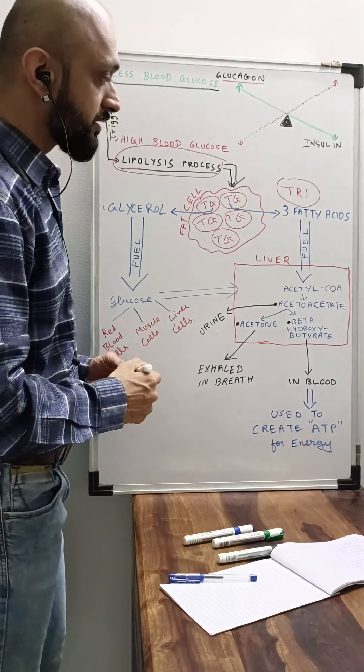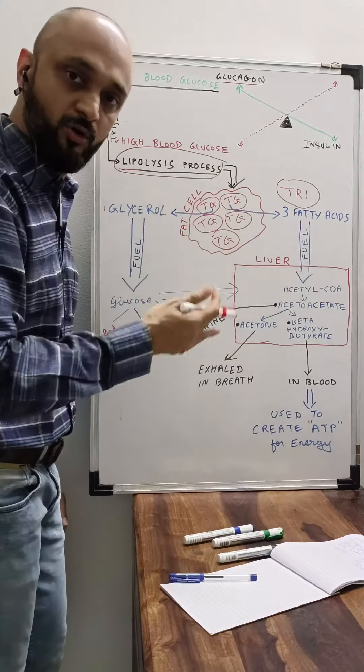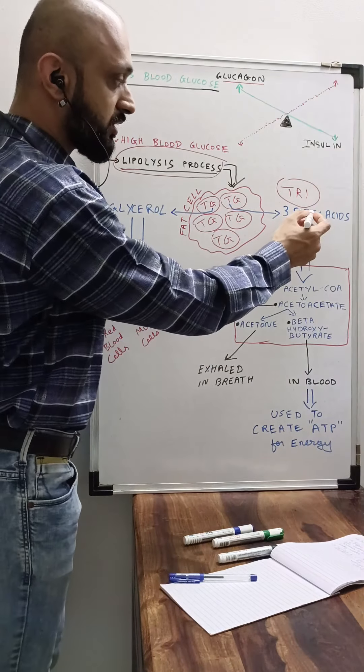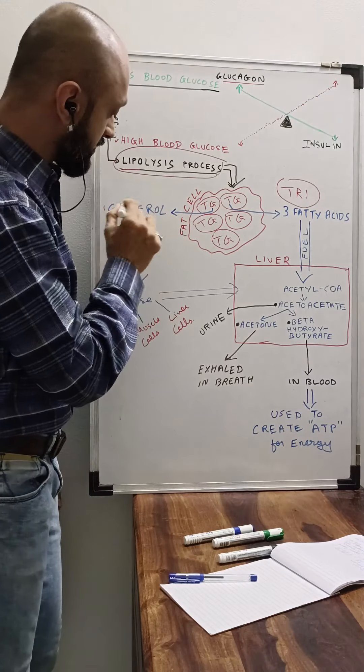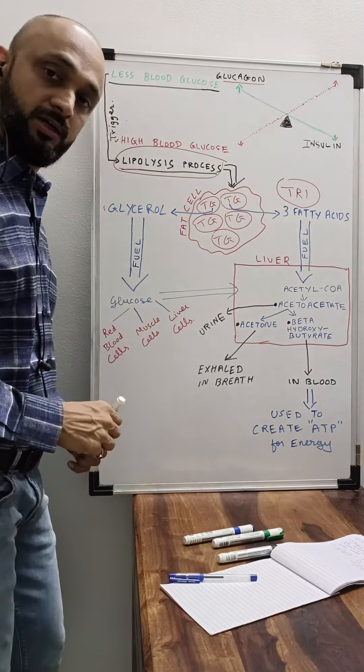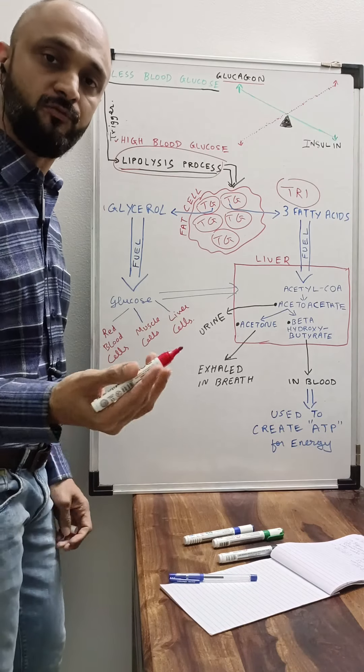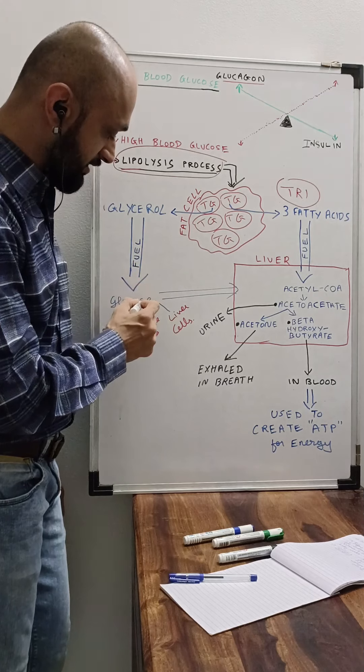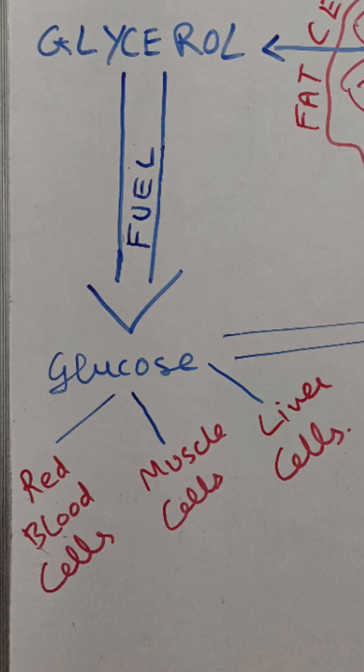These two energy substrates are already ready. When the glycerol is already created, this glycerol is a kind of a precursor of glucose. So this glycerol as fuel is now utilized for creating glucose.